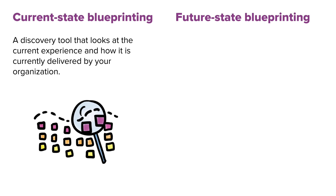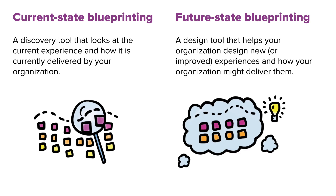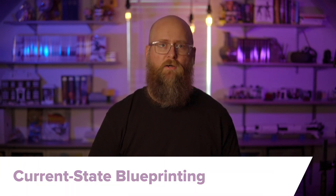There are two kinds of blueprints you can make: a current state blueprint and a future state blueprint. At a high level, current state blueprinting is a discovery tool that looks at the existing experience and how it's currently being delivered by your organization. On the other hand, a future state blueprint is a tool that helps you design new or significantly improved experiences, as well as speculating how your organization could deliver them. Before we get into the details of future state blueprinting, let's do a quick review of current state blueprinting.